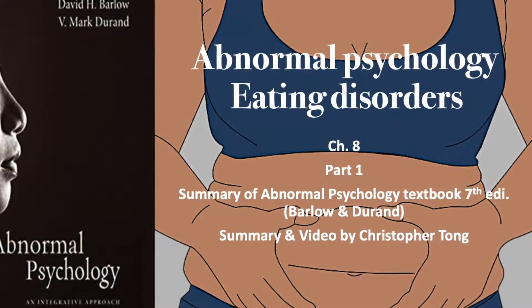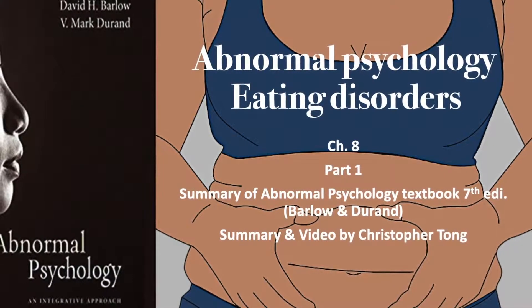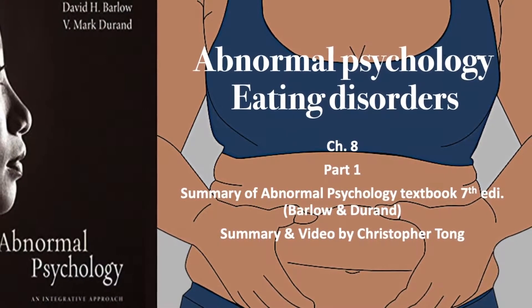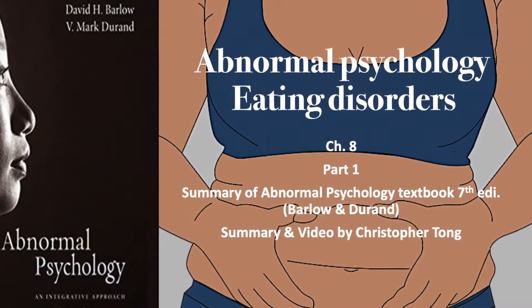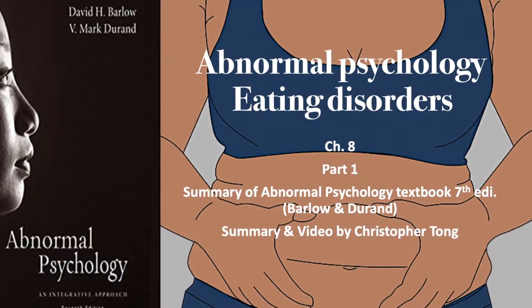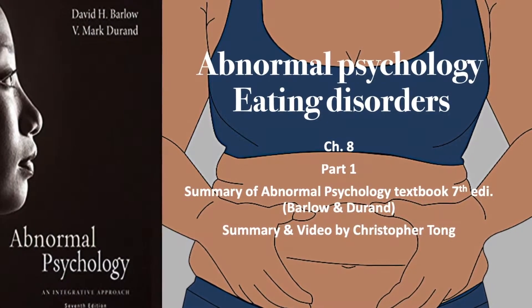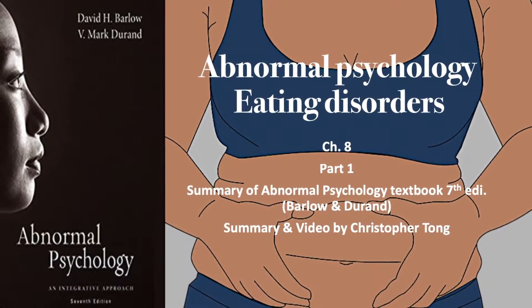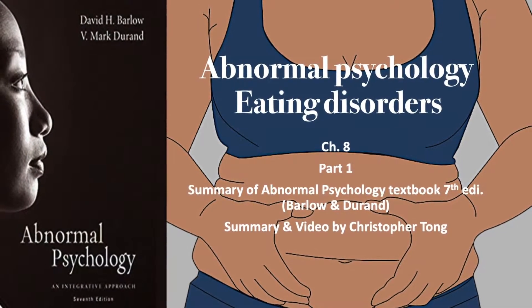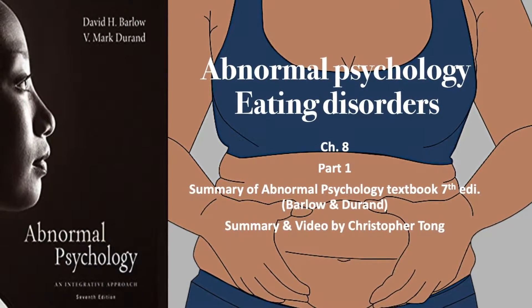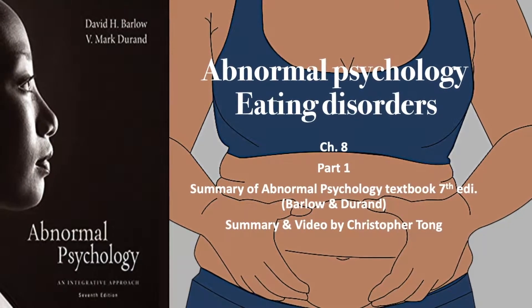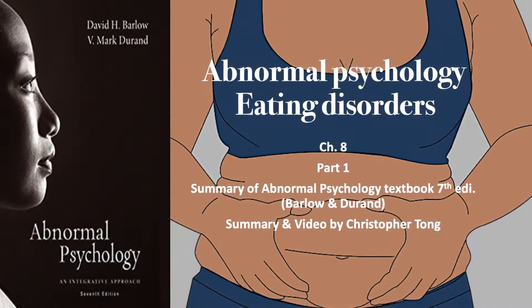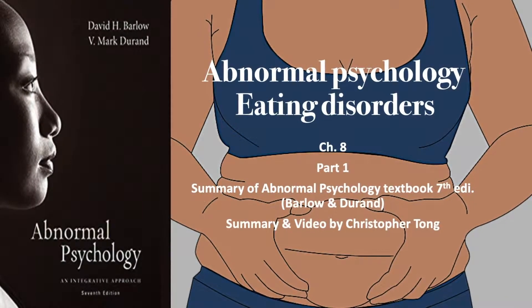Chapter 8: Eating and Sleep Disorders. This is a summary of Abnormal Psychology, 7th edition by Barlow and Durand, and this will be Part 1, covering eating disorders.